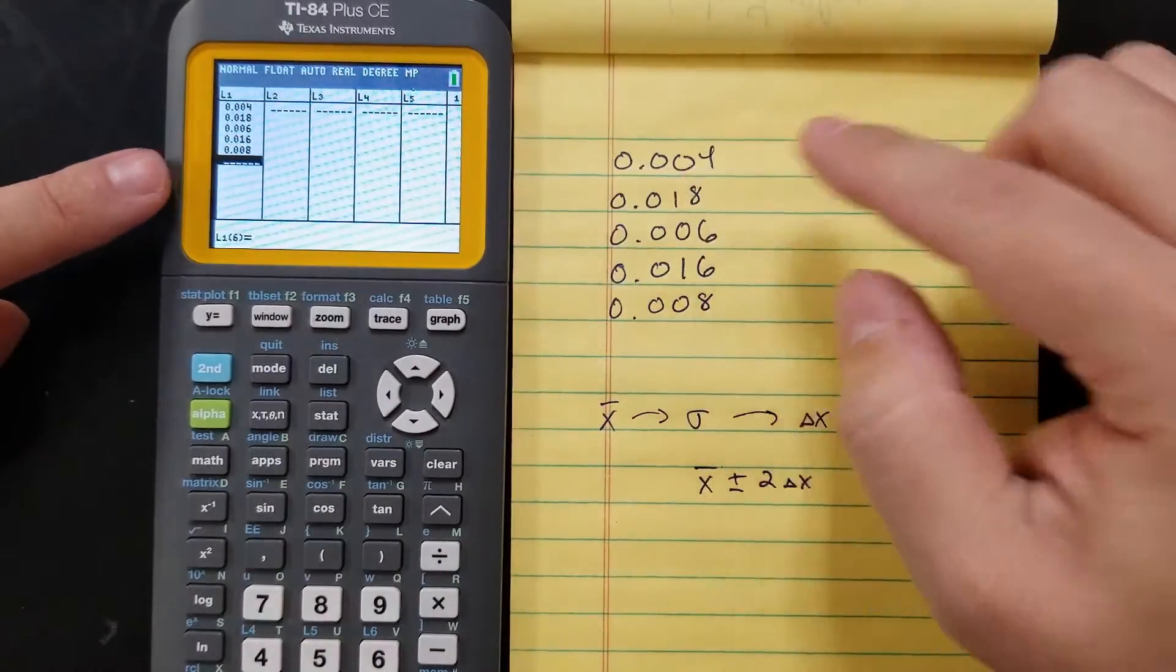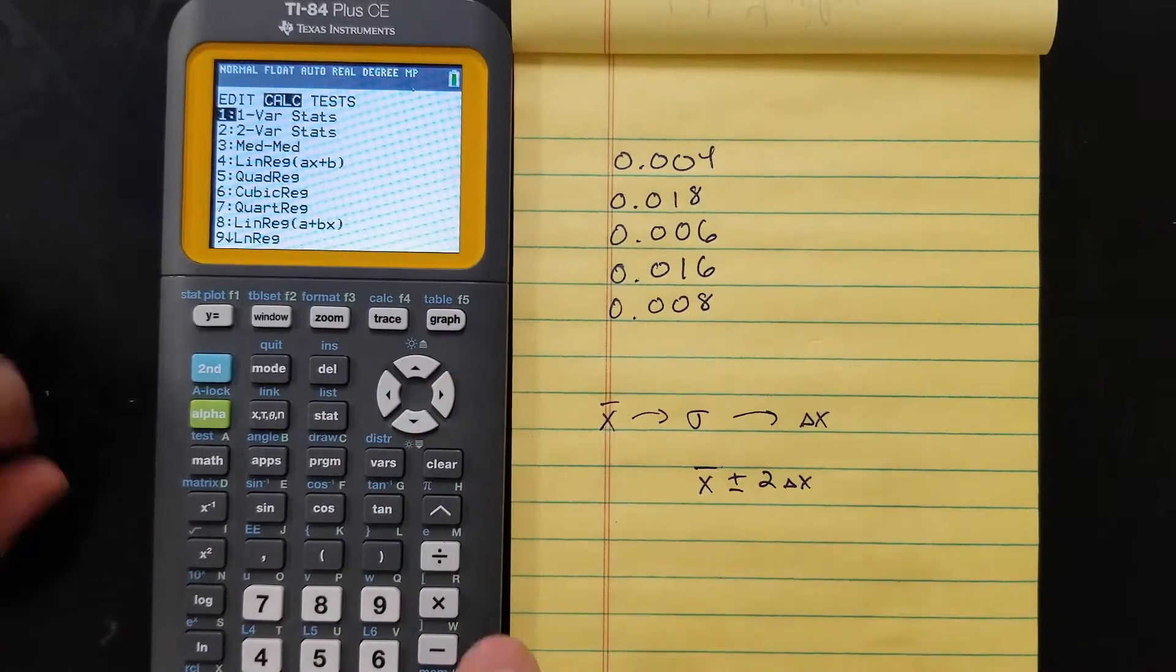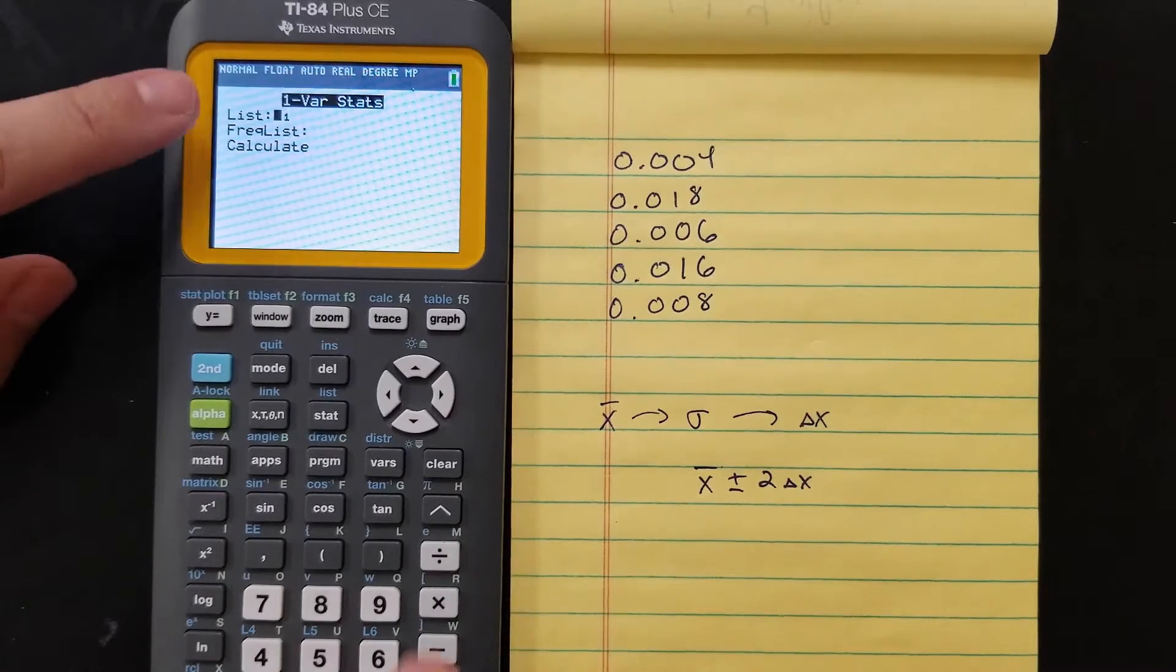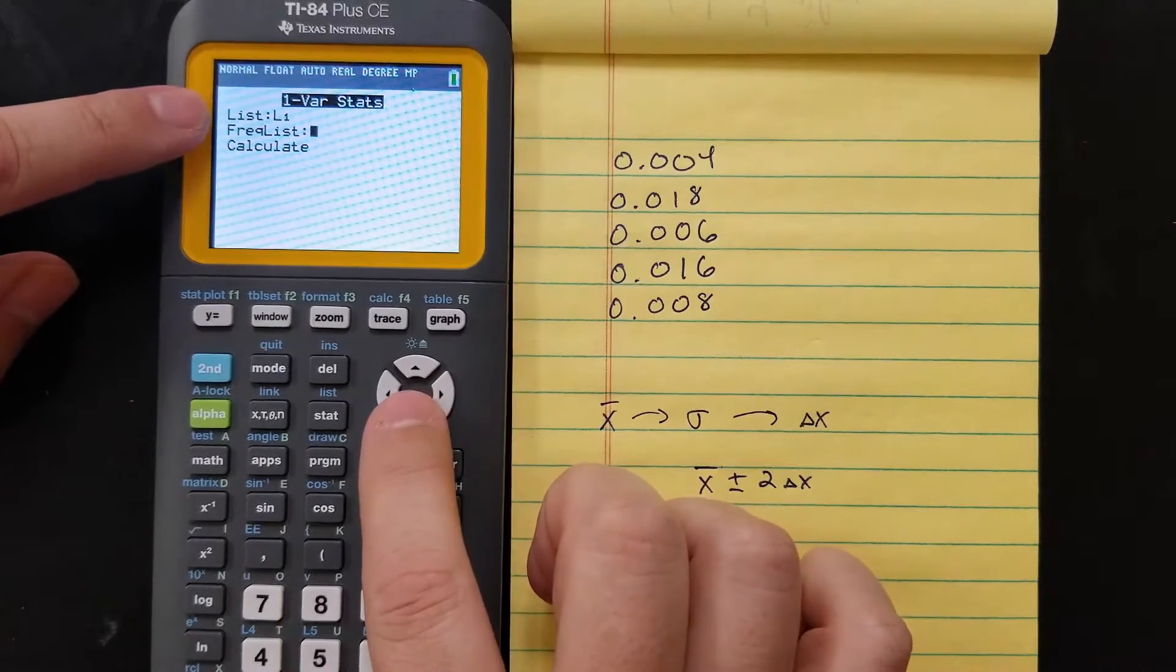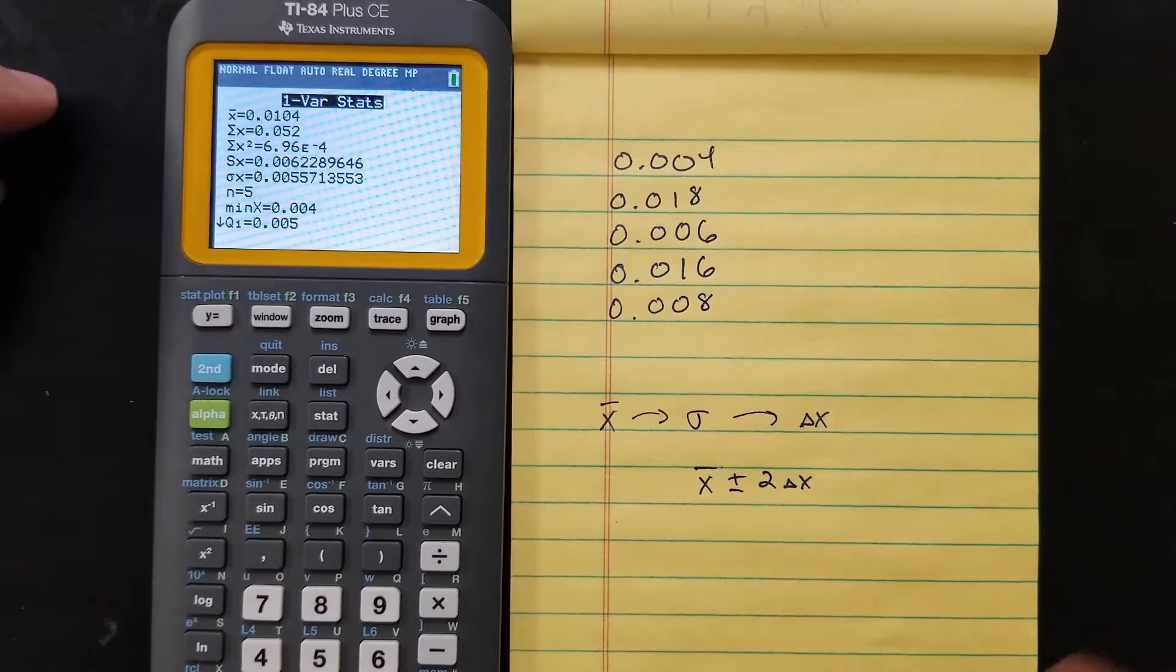Now that you've done that, it's in L1. So you can go back to STAT and then go over to CALC and pick single-variable statistics. Just press ENTER and then make sure list is L1, and then you go down to CALCULATE and it gives you all of this stuff.